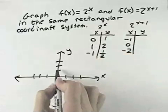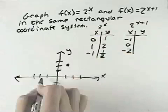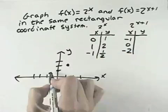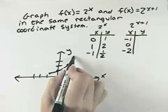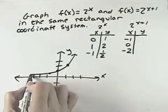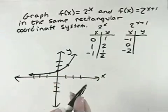So we have x is 0, y is 1. x is 1, y is 2. And x is negative 1, y is 1 half. And this would be an exponential equation that goes up to the right, which means the x-axis is the asymptote that it approaches to the left.